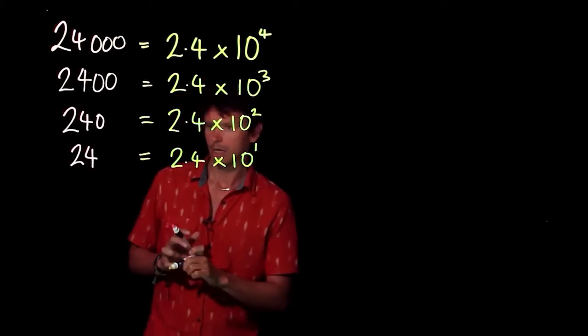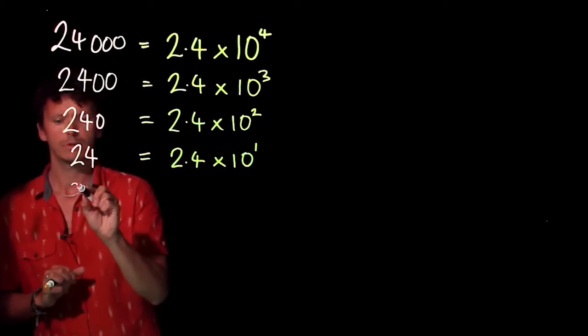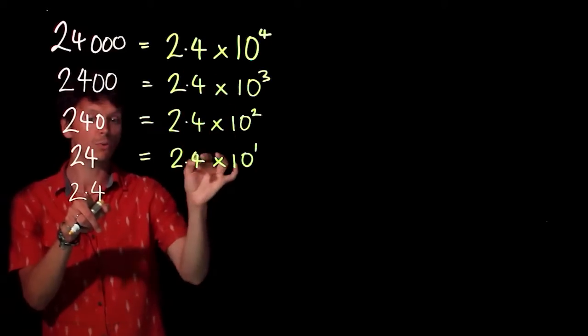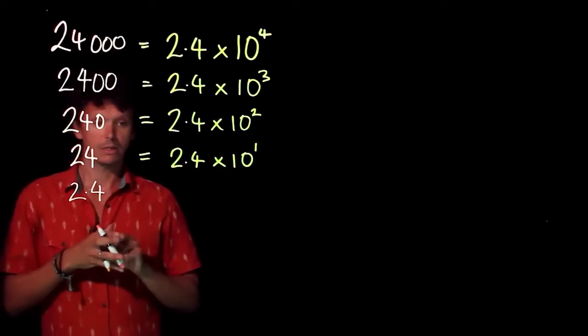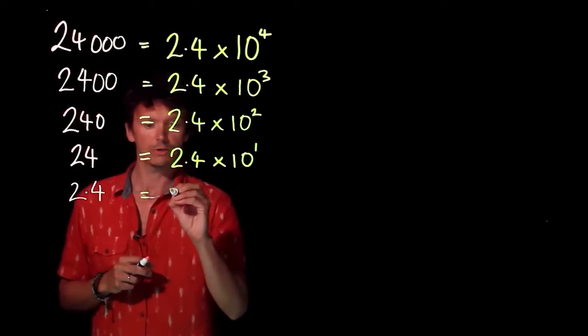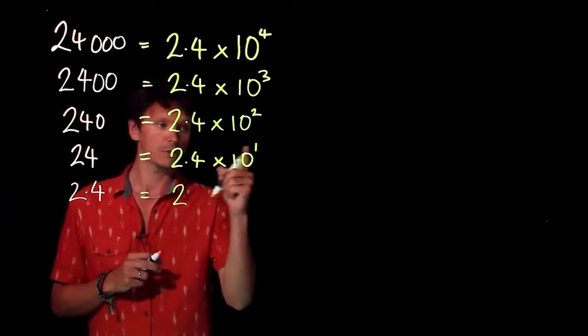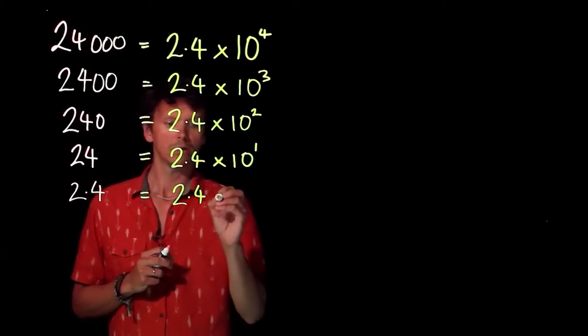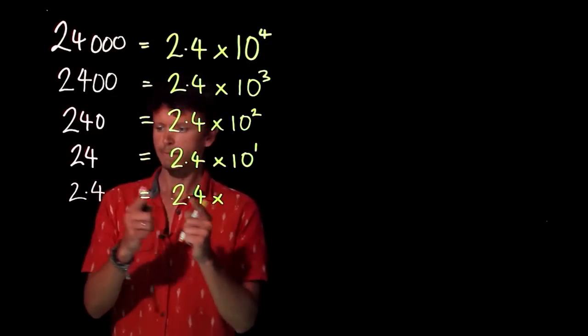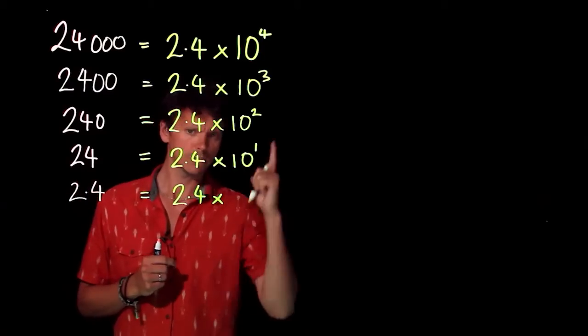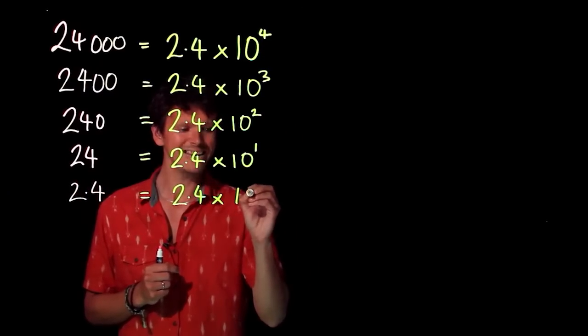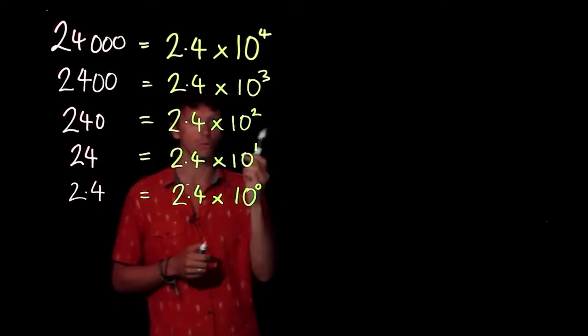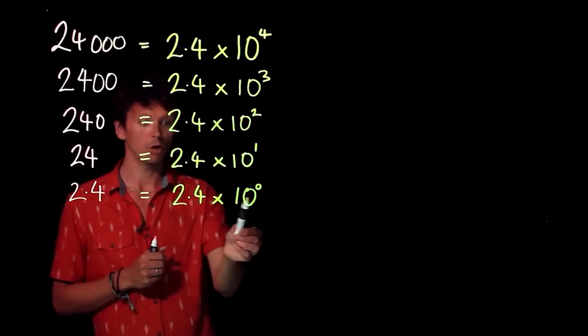Supposing we actually get to 2.4. Interestingly, this is the number we've been using all the way down. For scientific notation, we still have to do one number times a power of 10. What will we times 2.4 by to give us 2.4? We times it by 1, and in terms of a power of 10, that's 10 to the power of 0, because anything to the power of 0 equals 1.